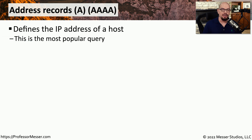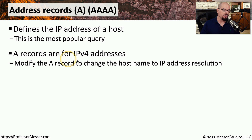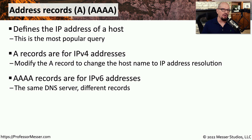The first record we'll look at, and perhaps one of the most common records you see in a DNS server, is an address record. We often refer to these as an A record or a quad A record. A records are address records for IP version 4, so an A record will have a fully qualified domain name and the associated IPv4 address. Quad A records are for IPv6 — the same concept applies, associating a fully qualified domain name with an IPv6 address.